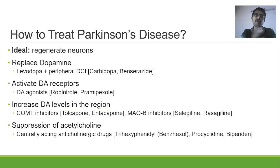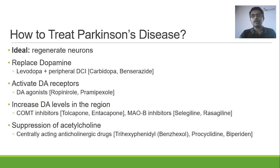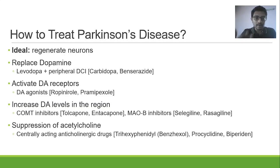The second way of management is to overcome cholinergic overactivity by giving anticholinergic drugs. You must select only those anticholinergic drugs that cross the blood-brain barrier — centrally acting anticholinergics such as trihexyphenidyl, procyclidine, and biperiden. This is how you manage Parkinson's disease.